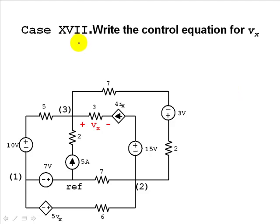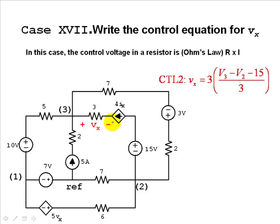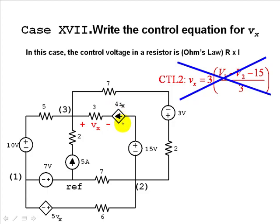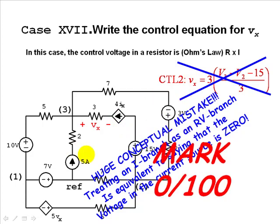Case 17: what if someone wrote the voltage across the 3-ohm resistor as V3 minus V2 minus 15, divided by 3? That is absolutely wrong. You would be neglecting the voltage across the 4·Ix current source in that branch. Treating an I branch as an RV branch is equivalent to saying the voltage across the current source is zero — a huge conceptual mistake that makes the answer worthless.